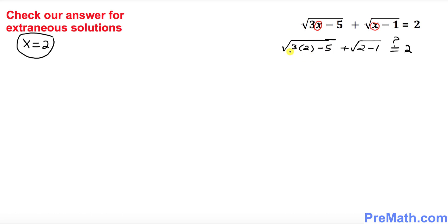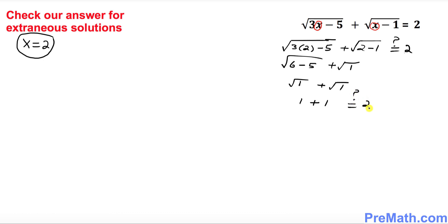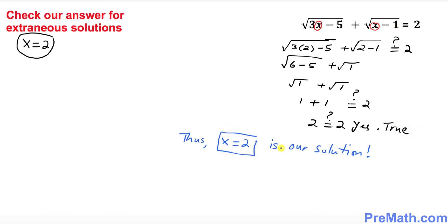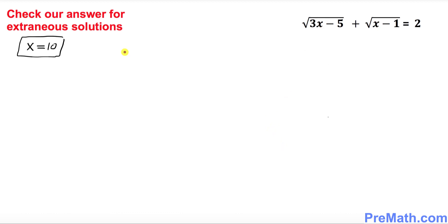Simplifying: square root of (6 minus 5) plus square root of 1 gives square root of 1 plus square root of 1, which is 1 plus 1 equals 2. The right-hand side is also 2, so 2 equals 2 is true. Therefore x equals 2 is a valid solution.